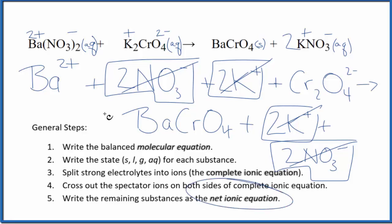What's left, that's the net ionic equation for Ba(NO3)2 plus K2CrO4. I'll clean it up, write the states. We'll have our net ionic equation.